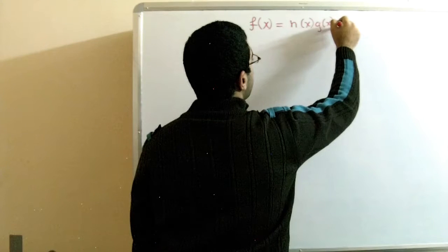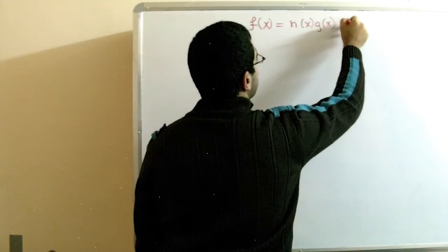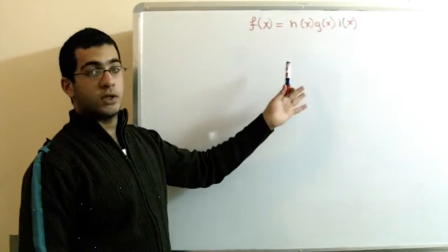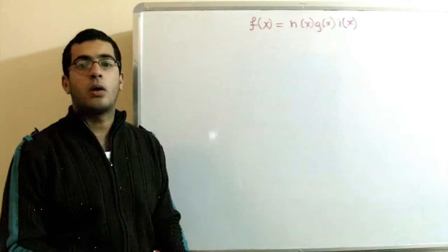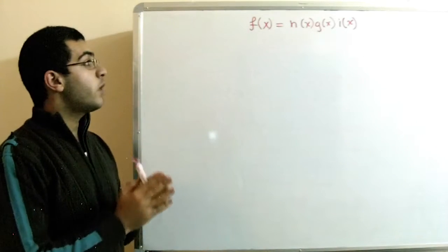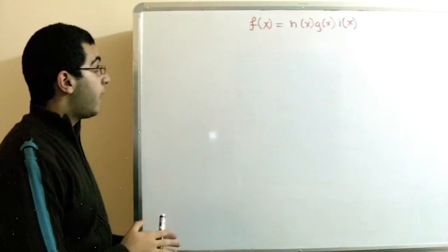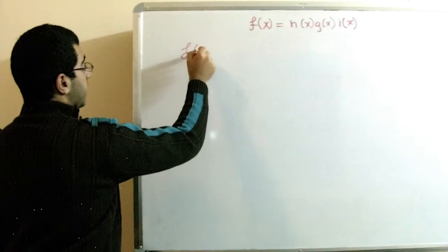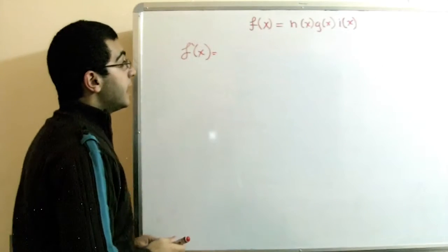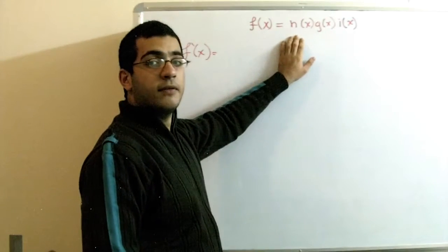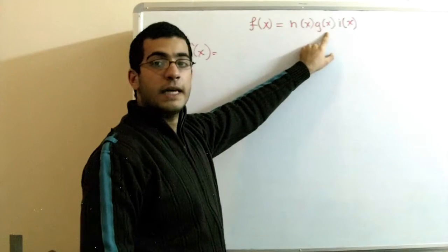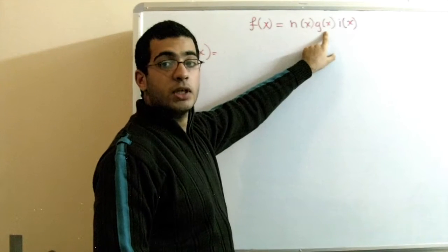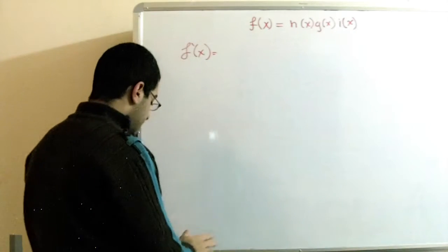It may look like this: f(x) = h(x)·g(x)·i(x) — so these are three functions. It's not complex at all; it's very easy. We do it the same way we did last time. We put the first function's derivative and then put the rest in the normal form. Then we take the derivative of the second function and put the first in the normal form.